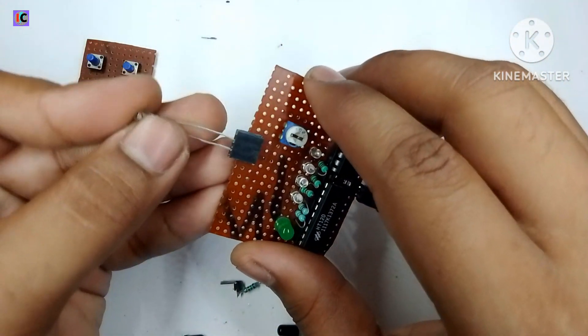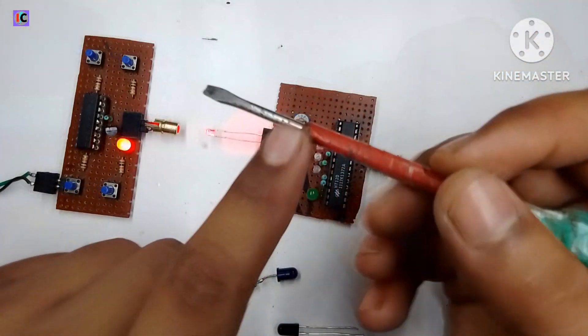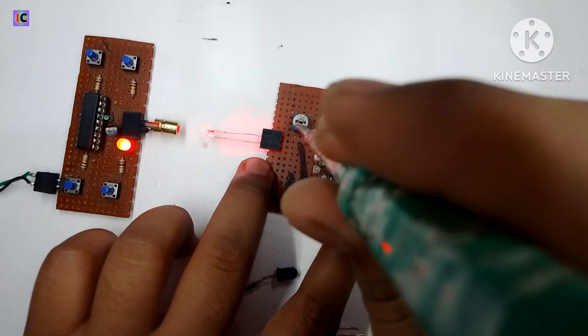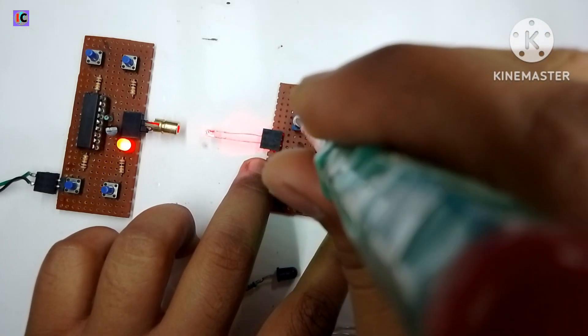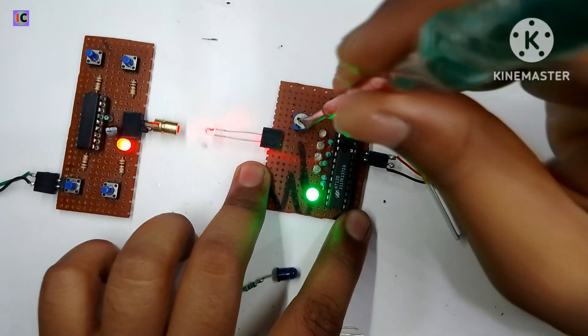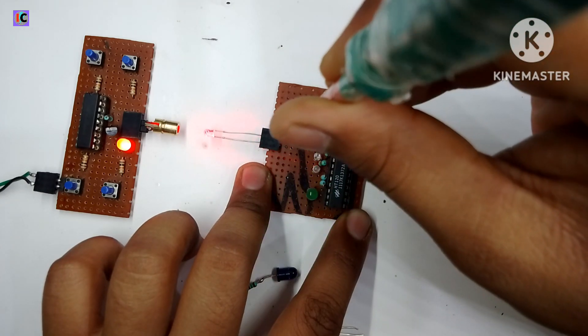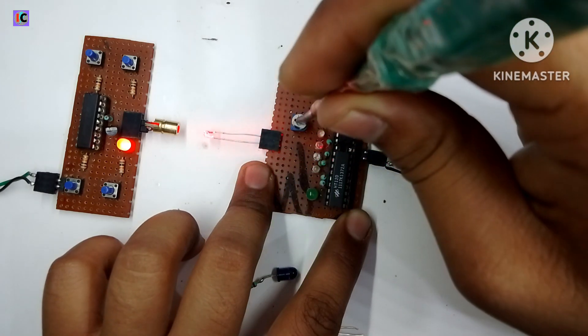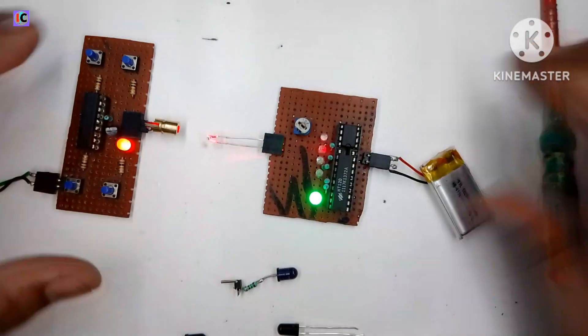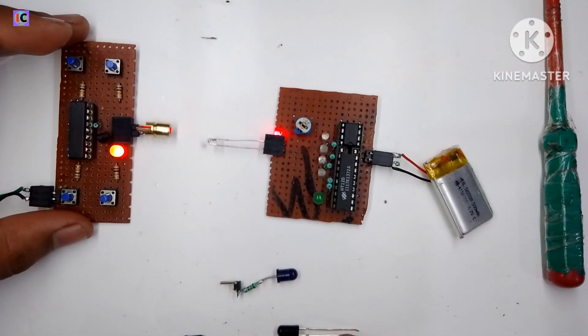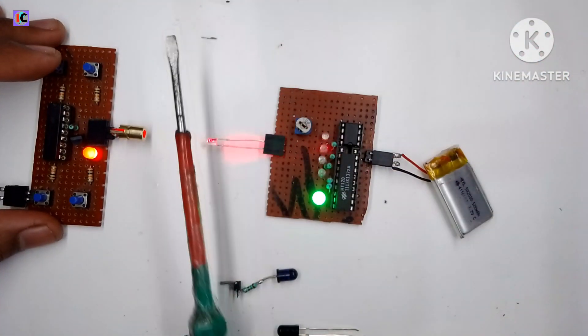For the receiving I am using this 3mm package type photo diode. For the calibration or the setting of the receiver I am adjusting the 10k potentiometer which is given in the receiver. When the green LED turns on it means our transmitter is connected with our receiver.